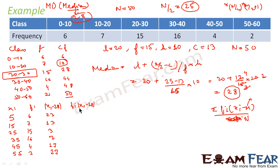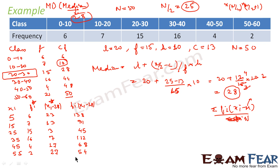Now we multiply fi × |xi − 28|: 6 × 23 = 138; 7 × 13 = 91; 15 × 3 = 45; 16 × 7 = 112; 4 × 17 = 68; and 2 × 27 = 54. Adding all these values: 138 + 91 + 45 + 112 + 68 + 54 = 508.